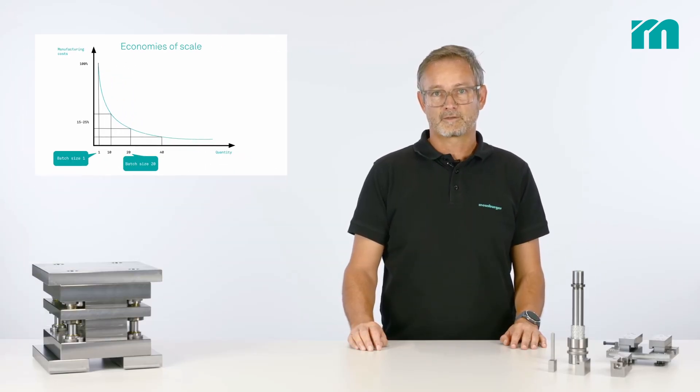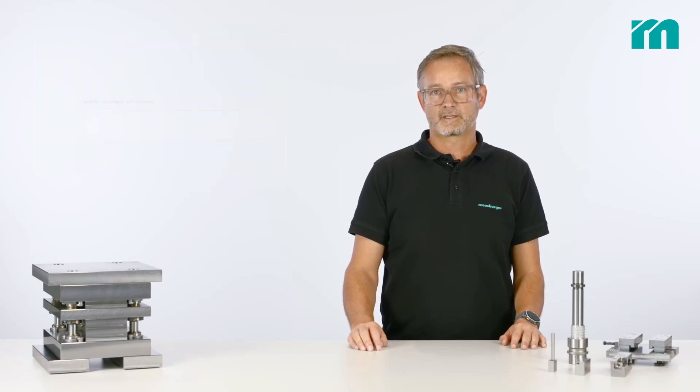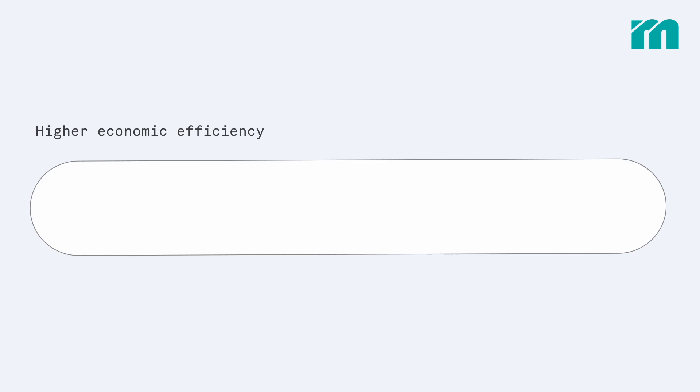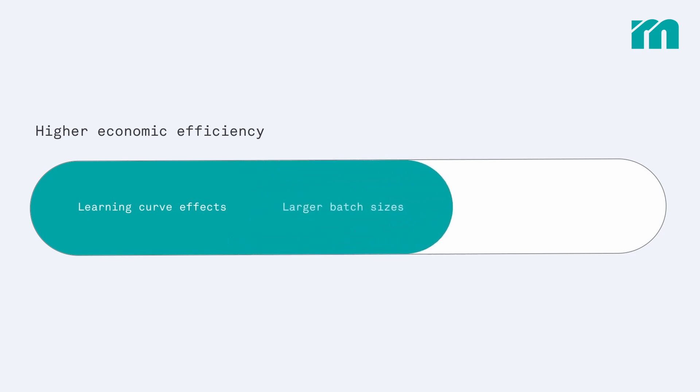Economies of scale can be achieved with consistent standardization. The following factors have an impact on higher economic efficiency: learning curve effects, larger batch sizes, and larger order quantities.